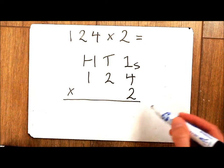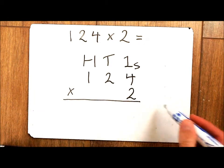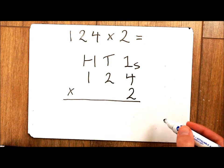It is called the compact method because you are not going to see any of my thinking down the right hand side which you would have seen in the expanded method.